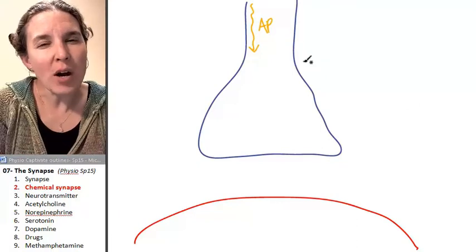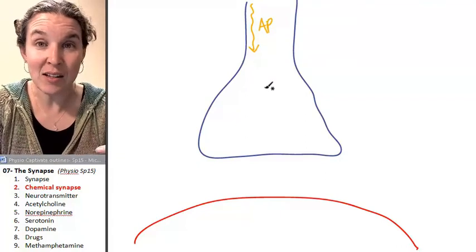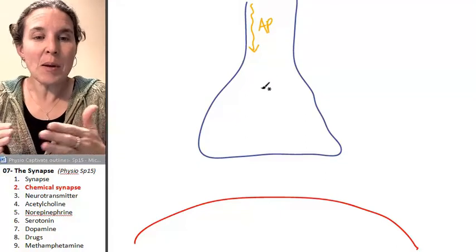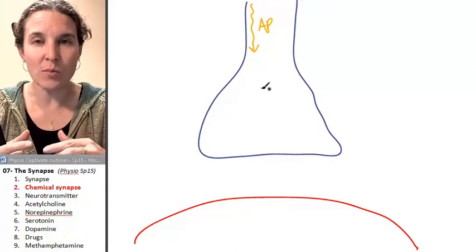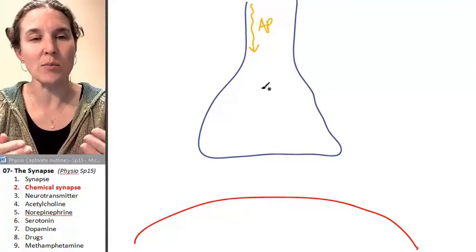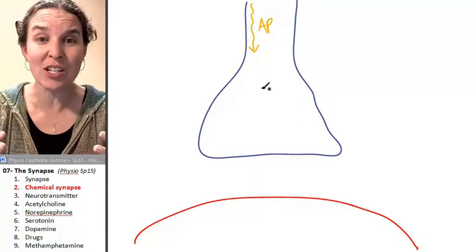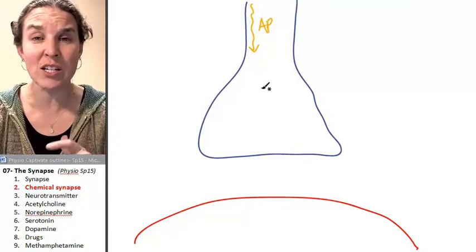And remember that as the action potential traveled down the axon, as the membrane potential changes, voltage-gated sodium channels and potassium channels are stimulated to open because of the change in membrane potential. They're voltage-gated channels.